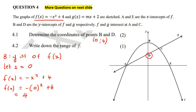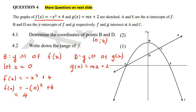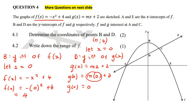Now to find D — D is the Y-intercept of G. So if you say G of X equals MX plus 2, we're going to let X equal to zero. M times zero is zero, so that gives us two. The coordinates of D would be zero and two. So we've got (0, 4) and (0, 2).